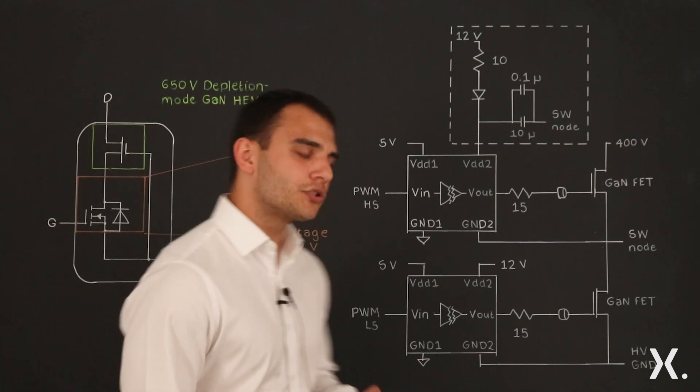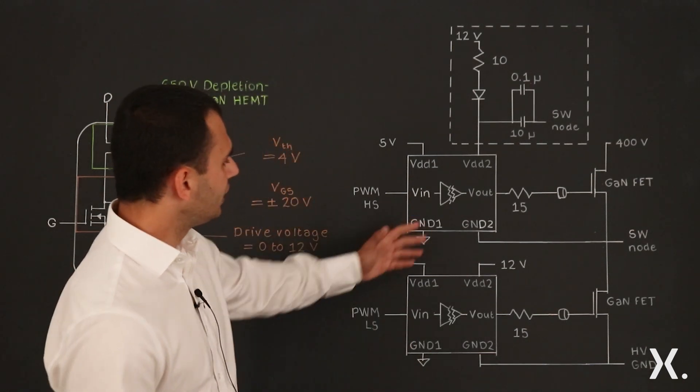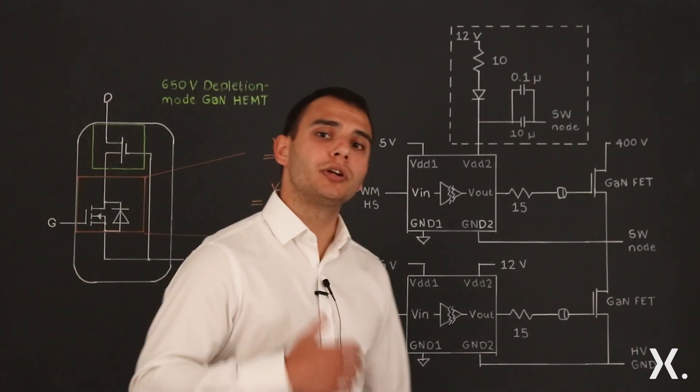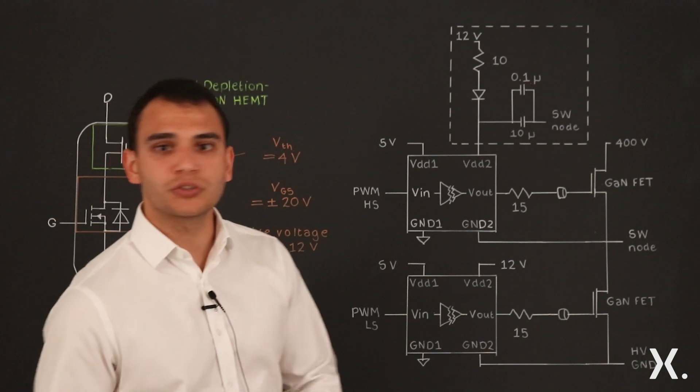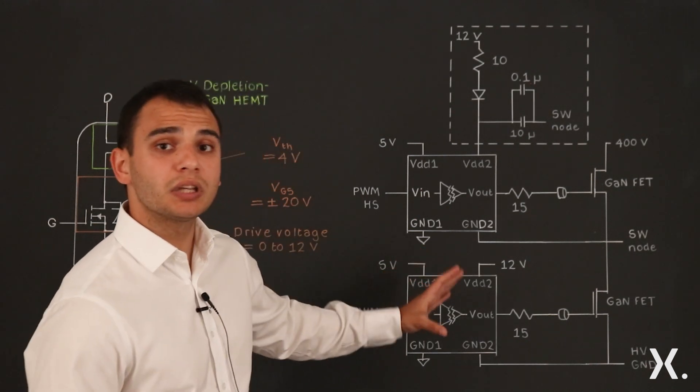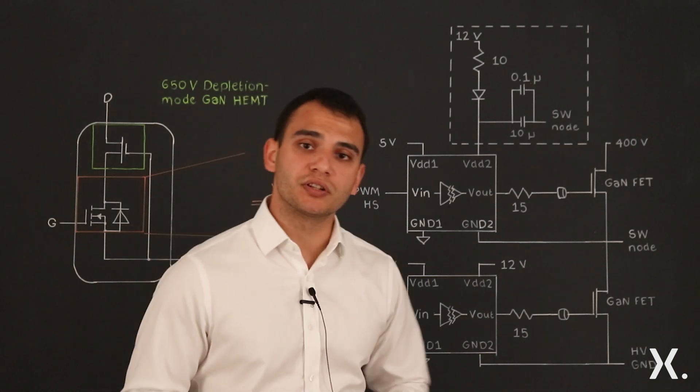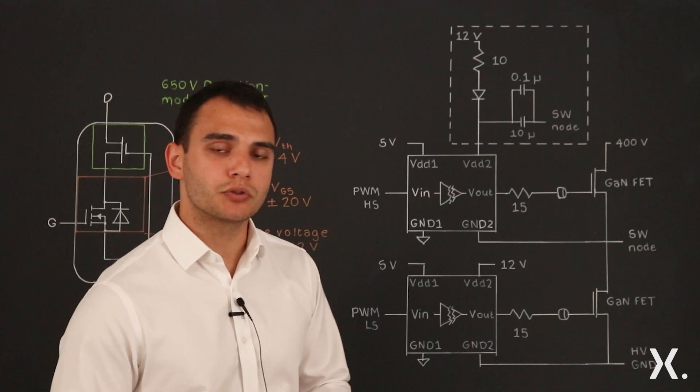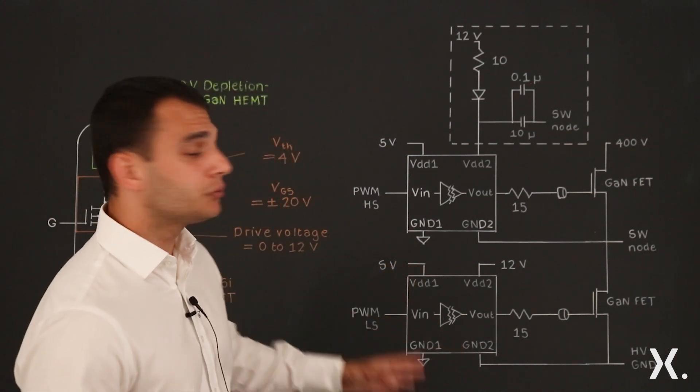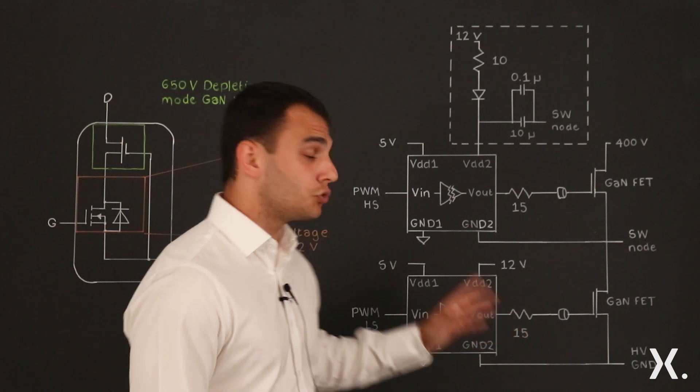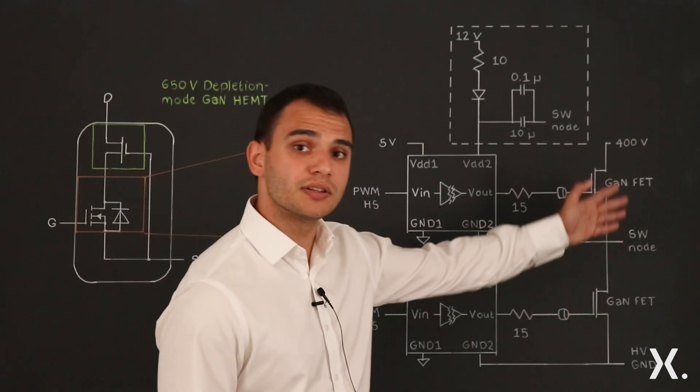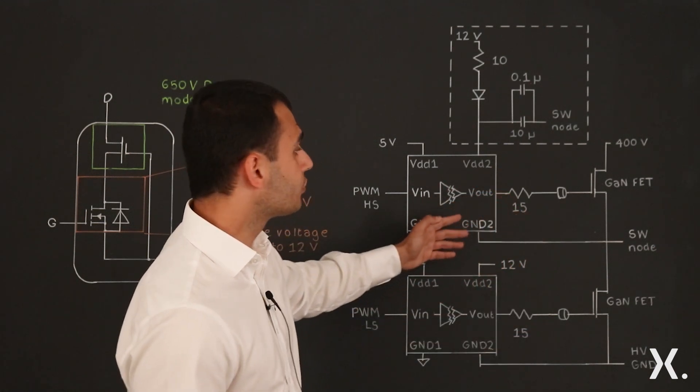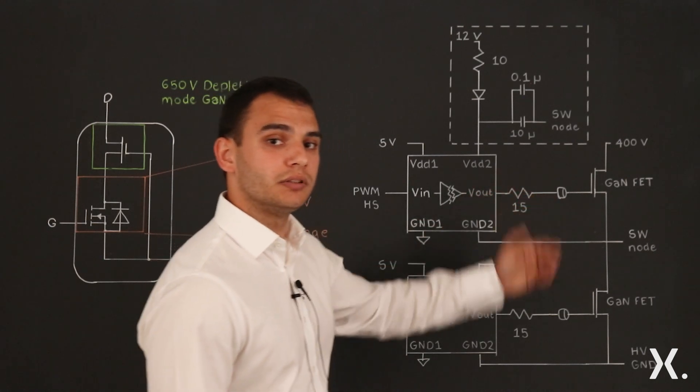Now let's look at the gate driver circuit. In here you have two gate drivers; we use one for the high side, one for the low side, and you can use any generic gate driver for silicon. The only thing you have to keep in mind is the common mode transient immunity. You have to have common mode transient immunity above 100 volts per nanosecond, and the reason you have to keep that parameter in mind when choosing the gate driver is because of the fast transients that the GaN devices will have. The gate driver has to be able to cope with these fast transients and switch reliably on and off the device.